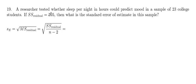We've got a researcher here who is testing whether sleep per night in hours can predict mood in a sample of 23 college students. So that 23, that's our n. And they tell us that the sum of squares of residuals is 105. And they want to know what is the standard error of the estimate in the sample.